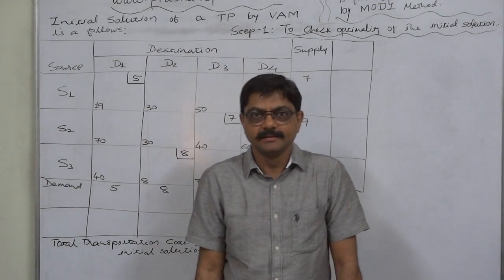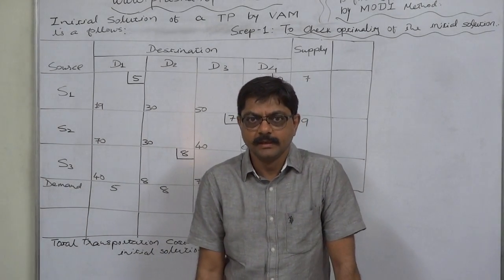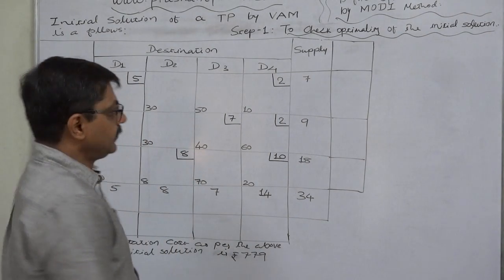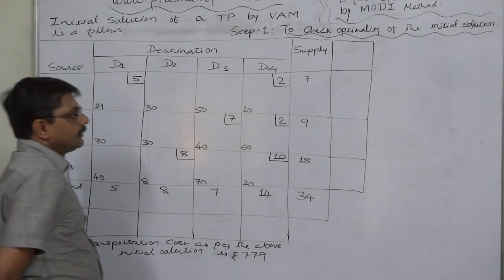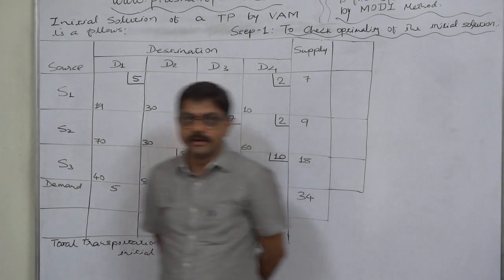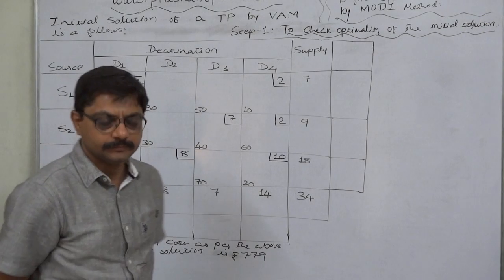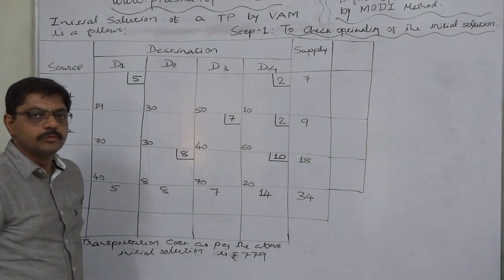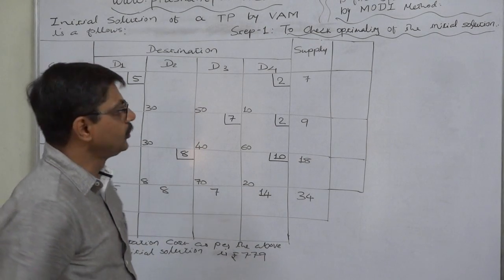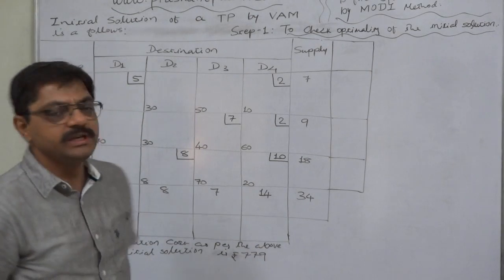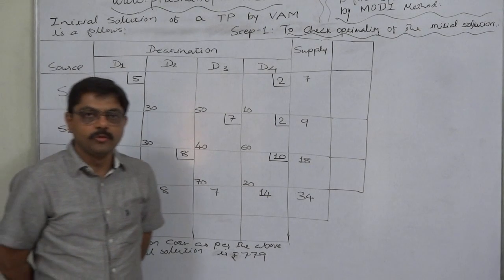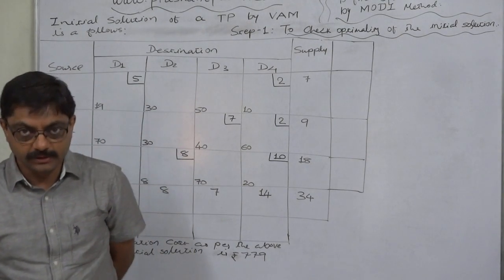Hello friends, welcome again. Let us study how to get the optimal solution of a transportation problem. The method to obtain the optimal solution of a transportation problem is known as the MODI method, which is the short form of Modified Distribution Method.